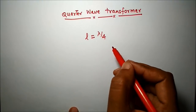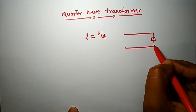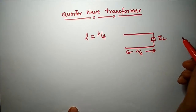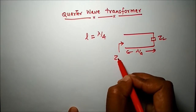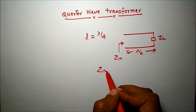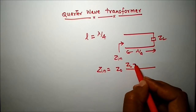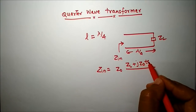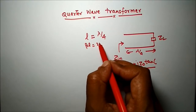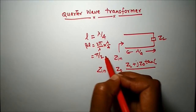What is the beauty of this quarter wavelength? If I take a transmission line having length lambda by 4, with load ZL, and calculate the input impedance, we get Z0(ZL + jZL·Z0·tan(βL)). If L is lambda by 4, then βL equals 2π/λ × λ/4, which is π/2.